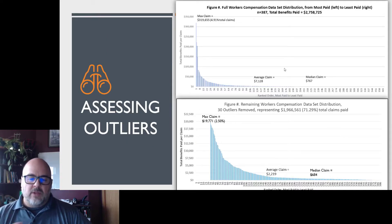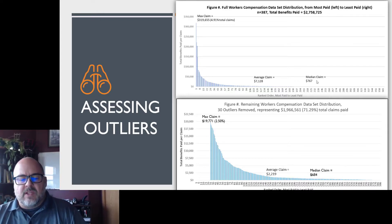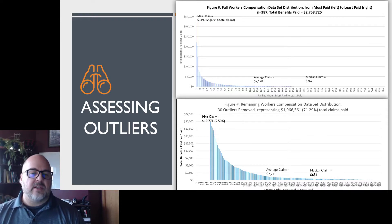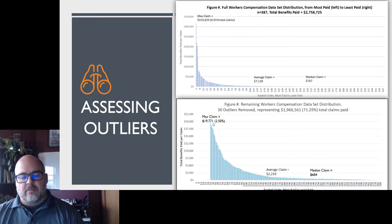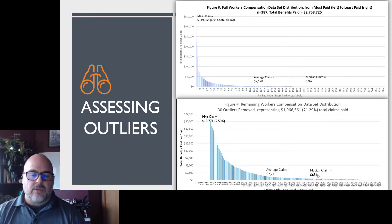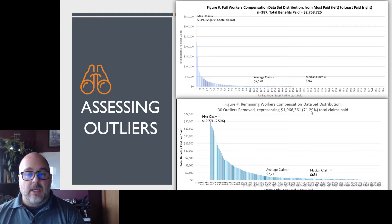Here's when we were looking at the outliers. For mine, I ended up deciding on 30. Here's the original with the max claim of almost $320,000. The average is a little over $7,000, and the median is just a little over $750. Removing the $320,000 outlier, the max claim is now $19,800. The average is $2,200, and the median is $680. So the average and the median came a little bit closer, though we know we don't have a normal curve. I've got 30 outliers removed representing just under $2,000,000, which was actually just a little over 71% of all the benefits paid in this data set.